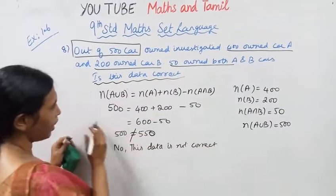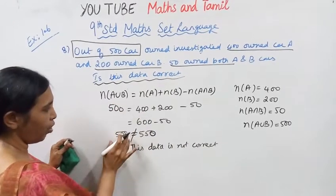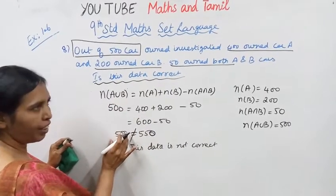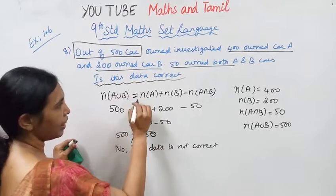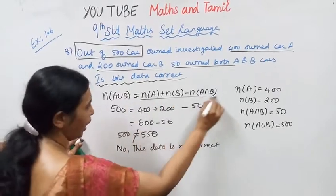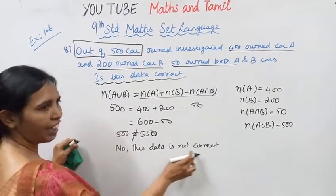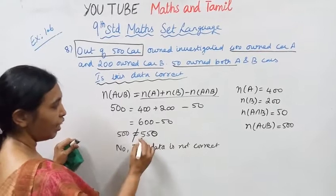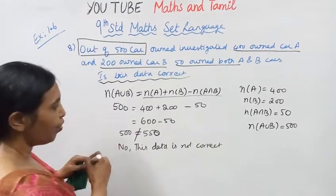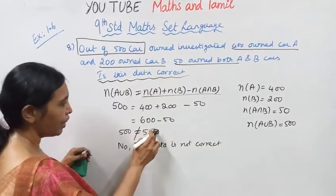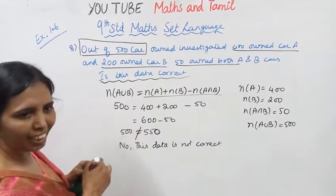The left-hand side does not equal the right-hand side. N(A∪B) comes out to 550, but the given value is 500. So the data is not correct.